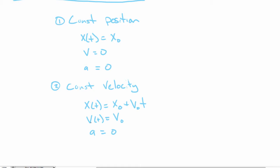If you rearrange things and solve for v₀, you'd get Δx over t, which is our basic definition of average velocity. But what happens if you integrate this equation? The time integral of v equals the integral of v₀ dt. v₀ is a constant, so we get v₀t plus a constant c. Never forget the integration constant. This looks similar to our position equation, and c has to have units of meters, so c is just x₀. It comes from our basic definition of velocity and how it relates to position by the derivative or integral.